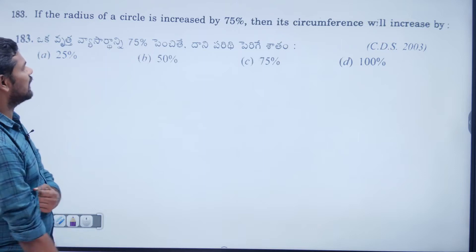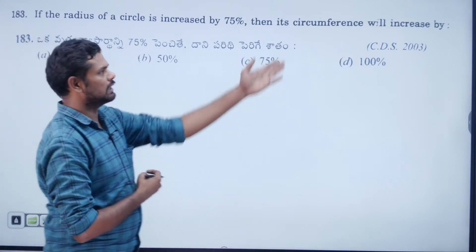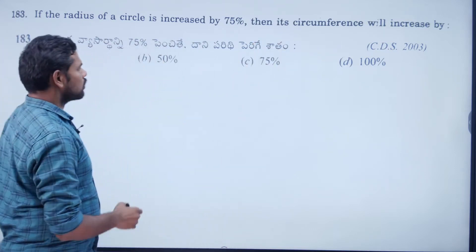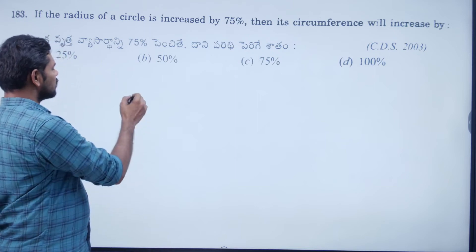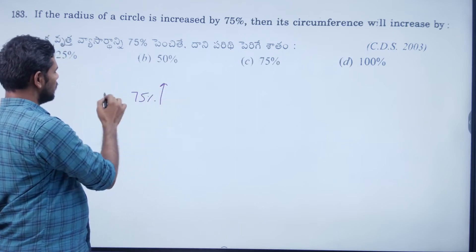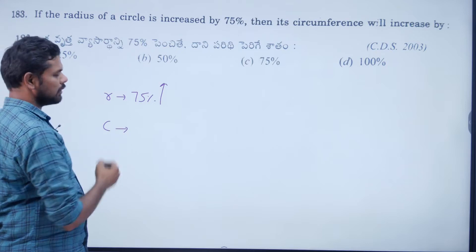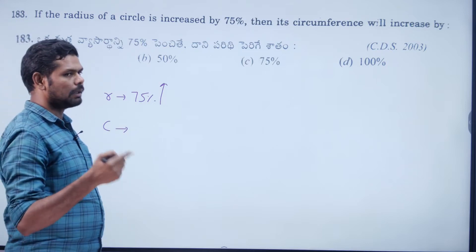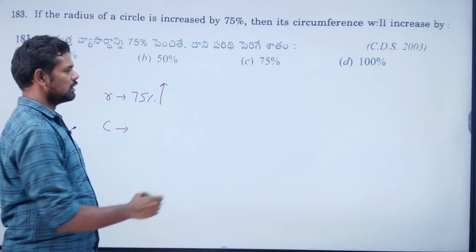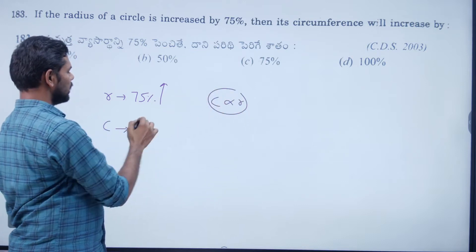If the radius of a circle is increased by 75%, then its circumference will increase by how much? Since circumference is directly proportional to radius, if the radius increases by 75%, the circumference also increases by 75%.